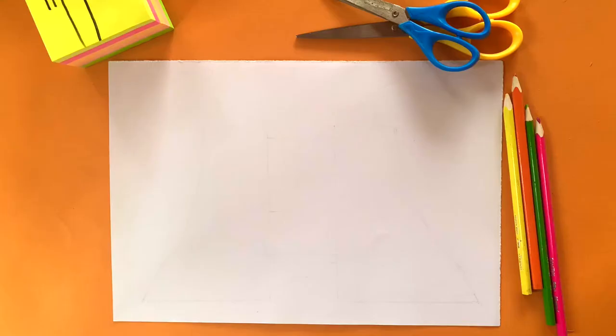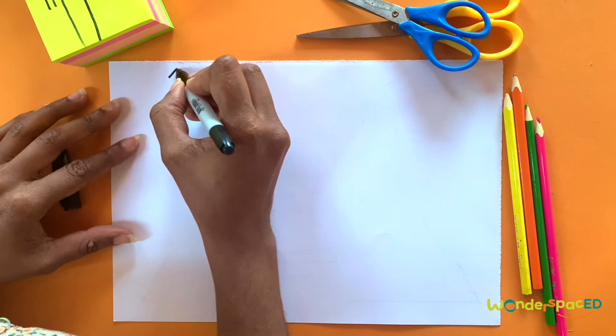Hello Wonder Space explorers, today we're going to create a simple 2D drawing of Jubilee House. Jubilee House is the office of the President. Can you draw along with me? Wonderful.